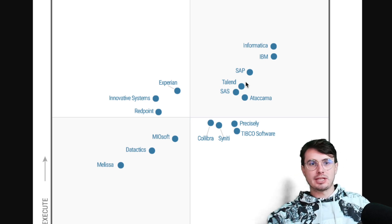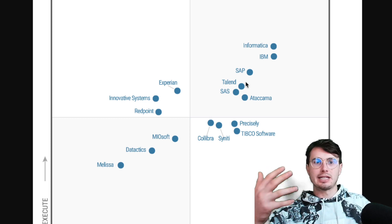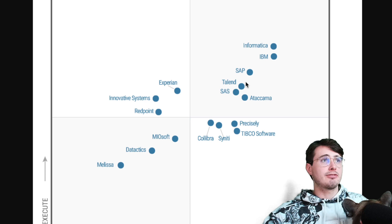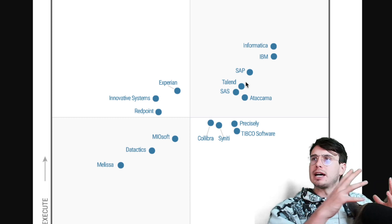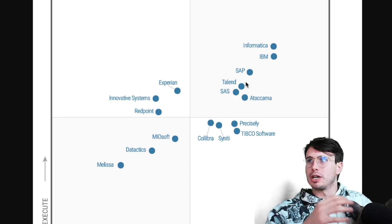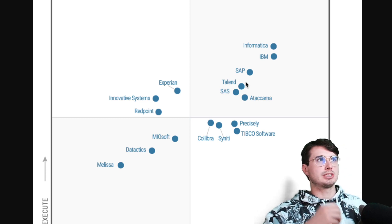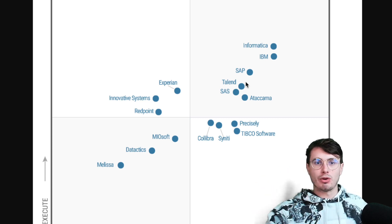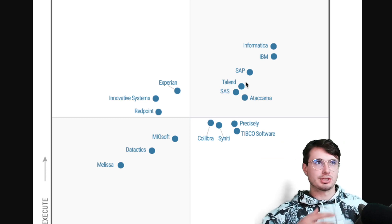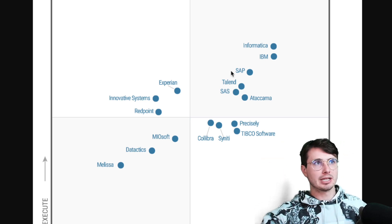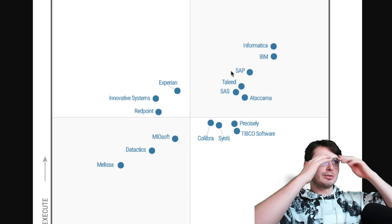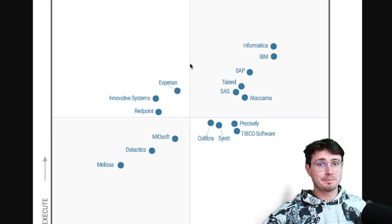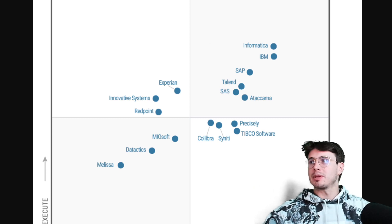You also have some newer providers on the scene — things like Great Expectations and Soda — that allow you to kind of build your own data quality solutions and implement them just in a Python script or as part of your existing data quality processes, rather than needing to install and buy a whole new system like Informatica or Talend and hook your existing processes into it. These are a little easier to integrate if you have existing data pipelines, especially if you're using something like Airflow.